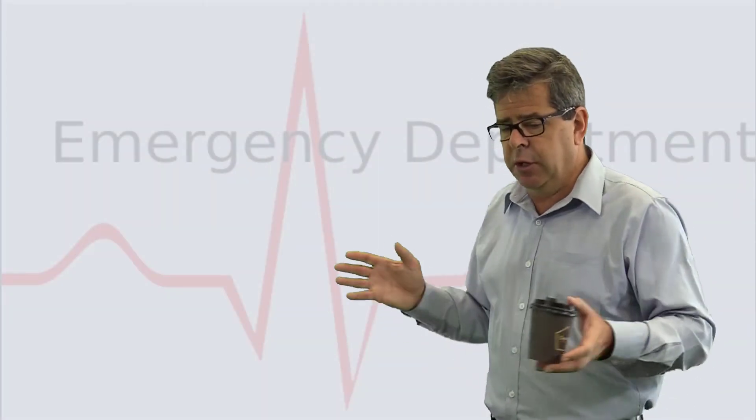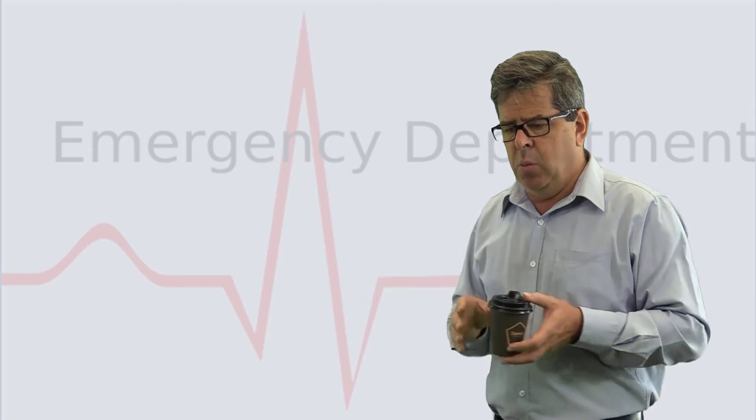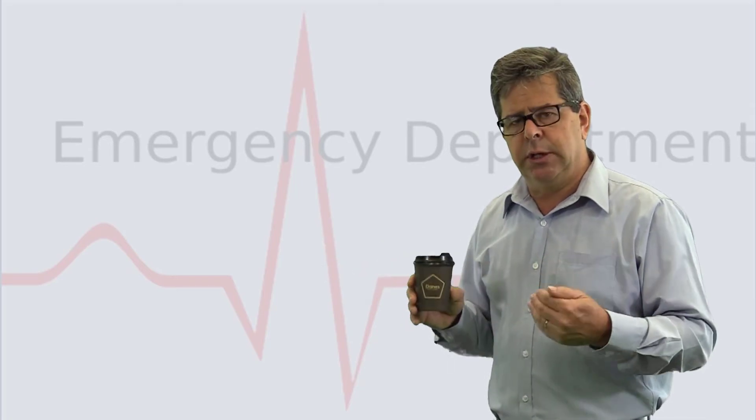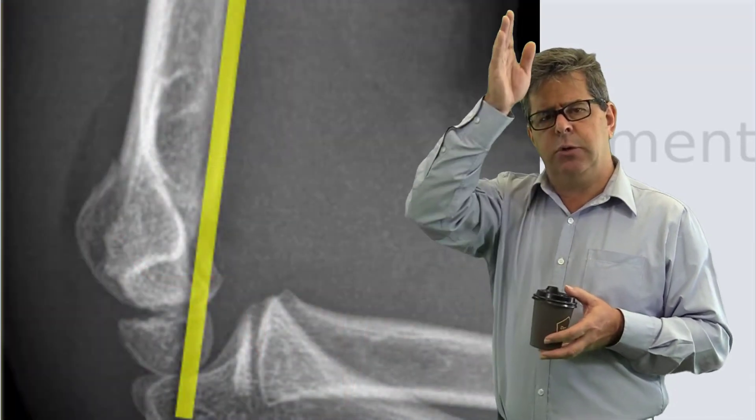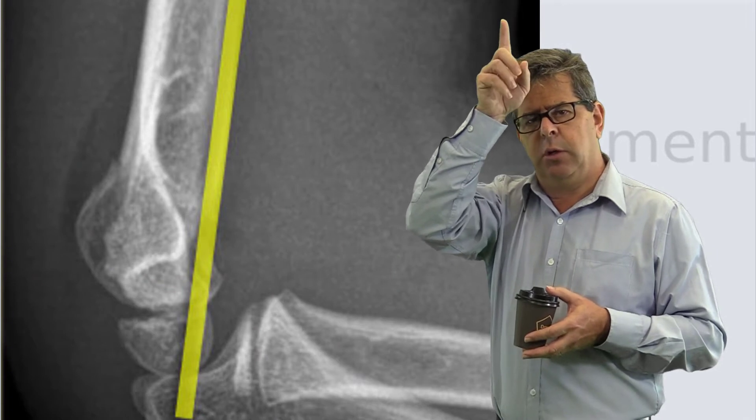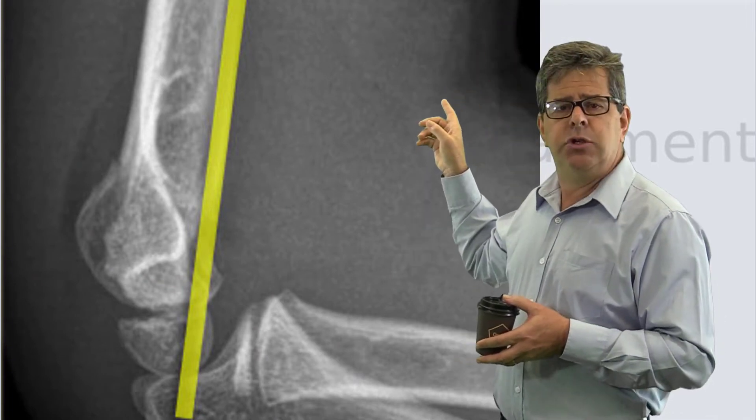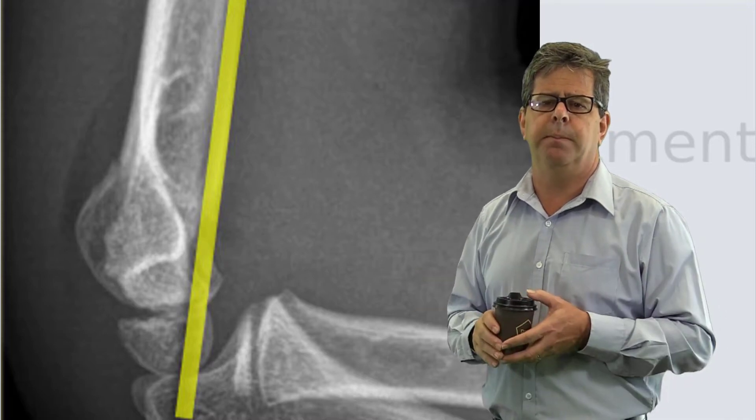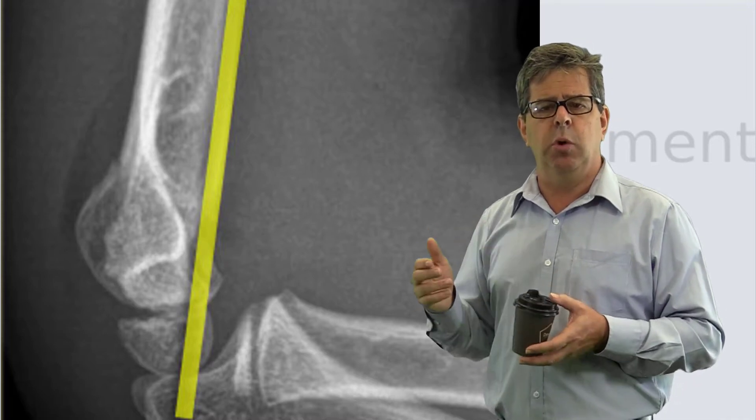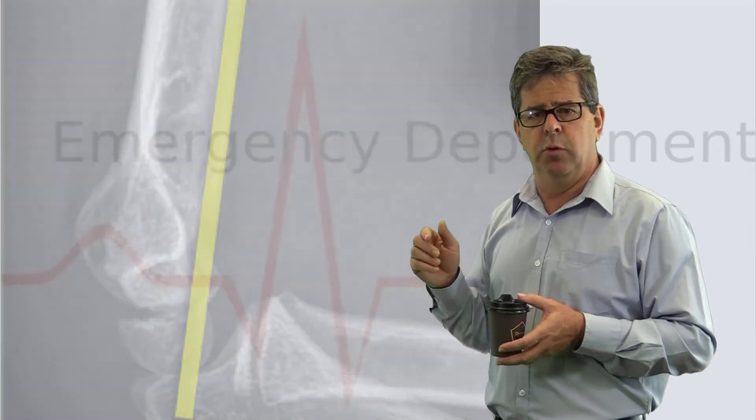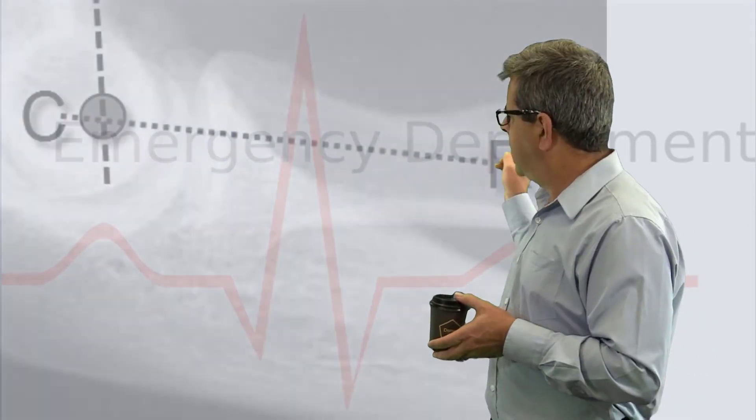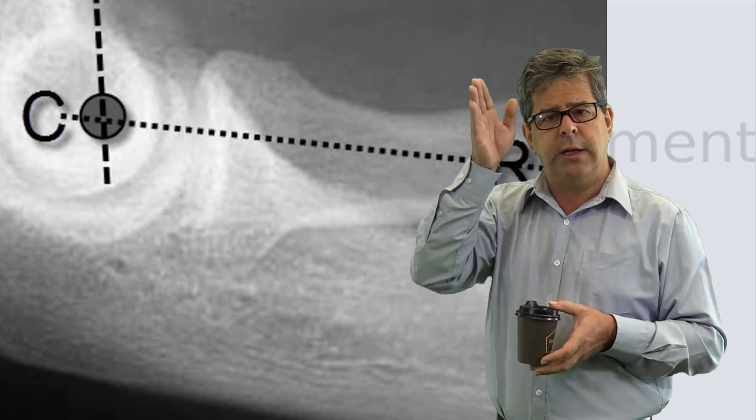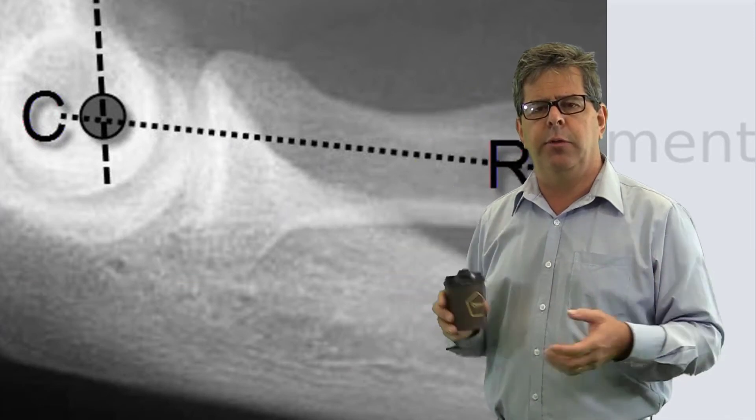On the lateral x-ray you can use the anterior humeral line. The anterior humeral line coming down should go through the middle third of the capitellum. This can be augmented on that lateral view with a line going through the middle of the radius, and that should cross with the anterior humeral line in the middle third of the capitellum.